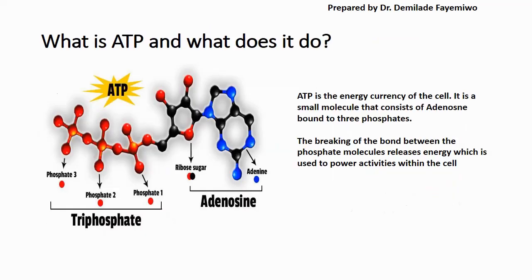What is ATP and what does it do? ATP is the energy currency of the cell — it is what supplies us with energy. As you can see in the image, it is made up of adenine and the ribose sugar, which together make up adenosine, and it has three phosphate molecules attached to it. So the full meaning of ATP is adenosine triphosphate. When you break the bonds between the phosphate molecules, you release a lot of energy, which is what ensures that we continue to function as normally as possible.